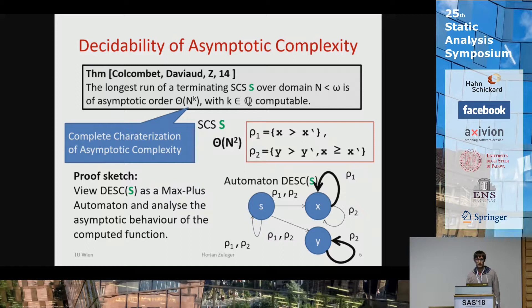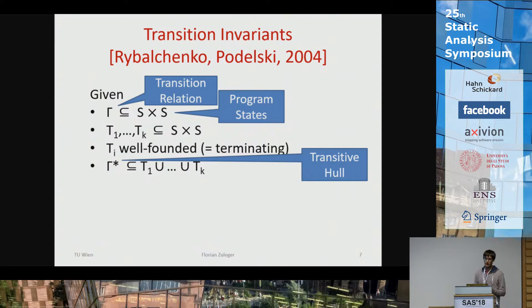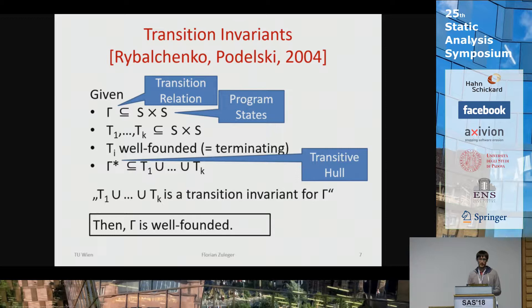On the other hand, we have transition invariants. You simply view your program as a transition relation, and to show termination you help yourself with some set of well-founded relations T1 through Tk. The assumption is that the transitive closure of the program is contained in the union of these relations — this union is called a transition invariant — and then the program is well-founded, i.e., terminating.